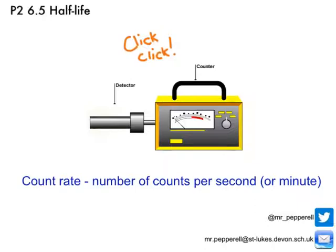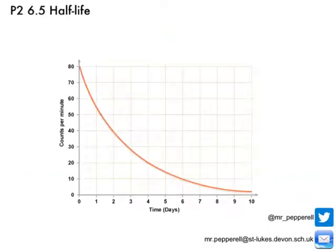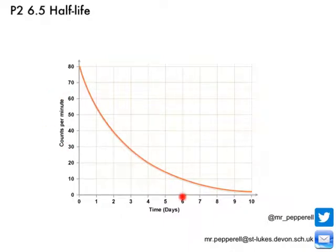If we monitor this count rate for a while, what we'd start to see is the count rate going down as the parent atoms are turning into daughter atoms. And if we monitor the change in that count rate, we can actually plot a graph of it. This graph recorded the count rate over a period of time for a radioactive isotope. We can see that the count rate is falling — we've got our counts per minute on the y-axis and days passing on the x-axis.